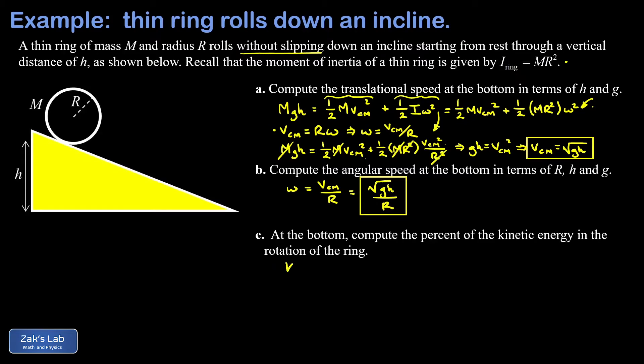That rotational kinetic energy term ended up simplifying to one half m v center of mass squared. So in total I have my translational kinetic energy one half m v center of mass squared, and my rotational kinetic energy which simplified by using the rolling without slipping condition to one half m v center of mass squared.